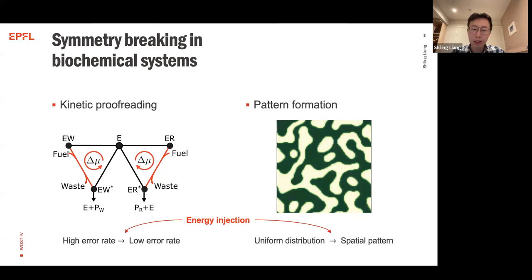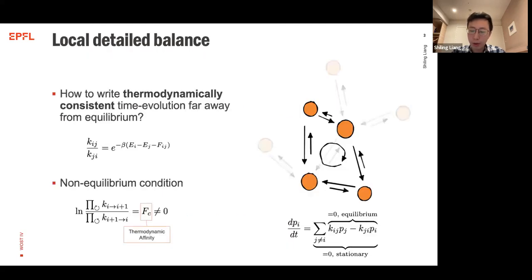What we want to answer is whether we can say something more general to unify all these different symmetry-breaking mechanisms in a unified scope. Before we talk about the unified bounds or the cost to break symmetries, we first need to write everything down in a thermodynamically consistent way.